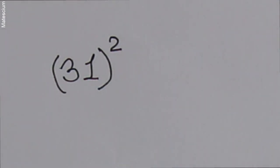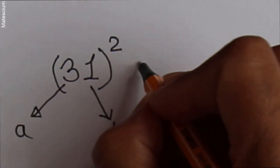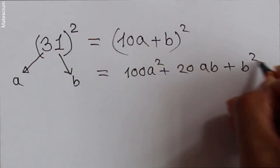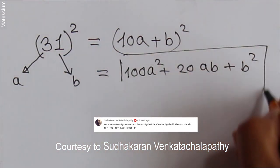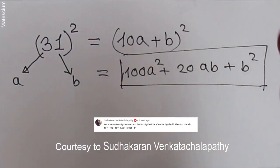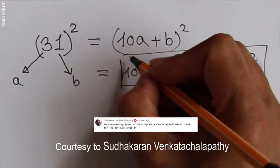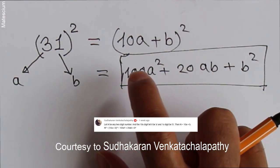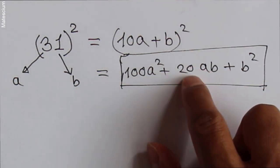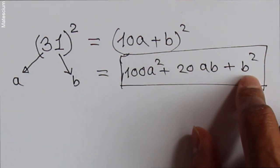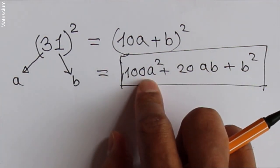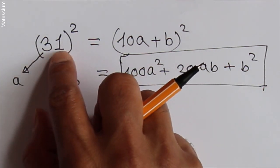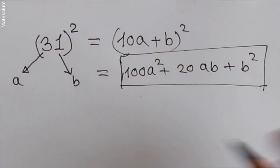Let's consider any random number — let's say 31. This is the formula you can use to calculate the square value of any two-digit number within 5 to 10 seconds. Just remember: 100A² + 20AB + B². In this formula, A means the first digit of the number and B means the second digit of the number. Let's prove it right now.